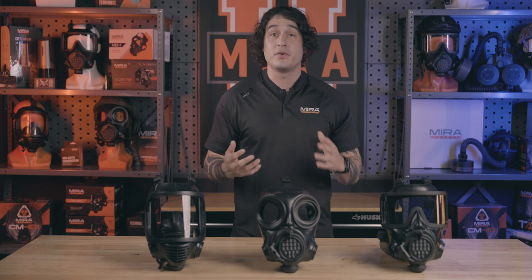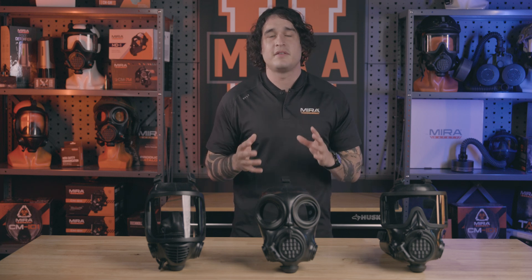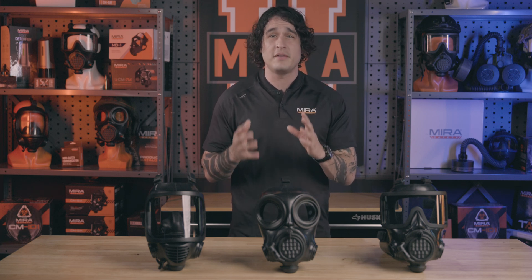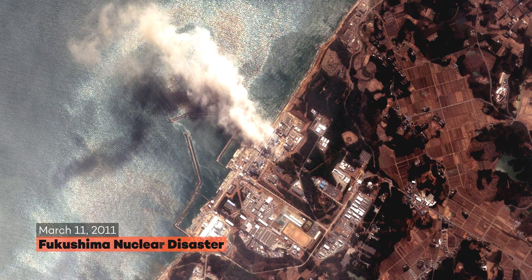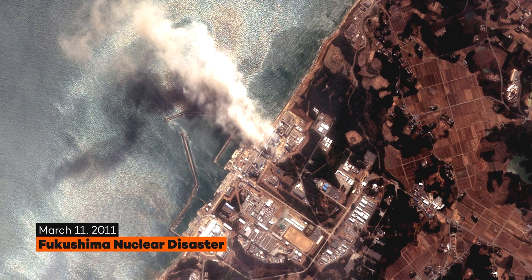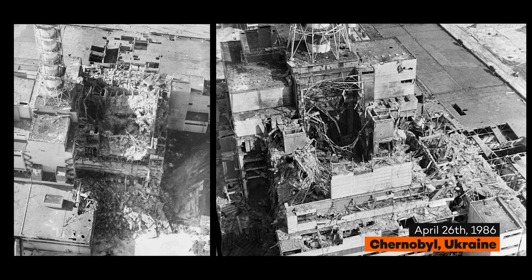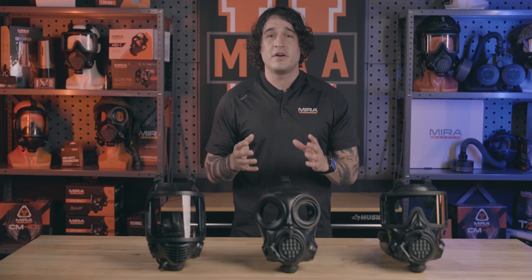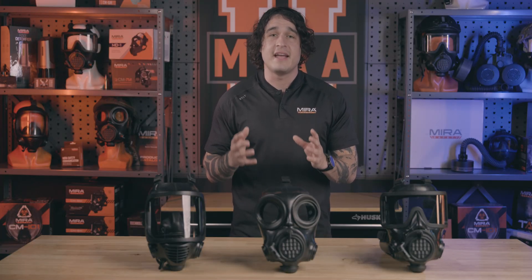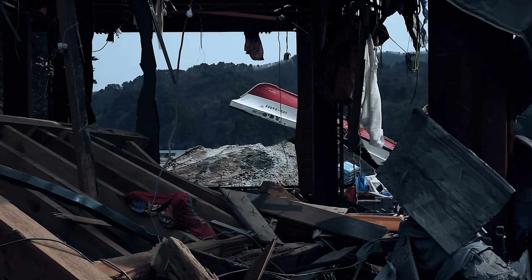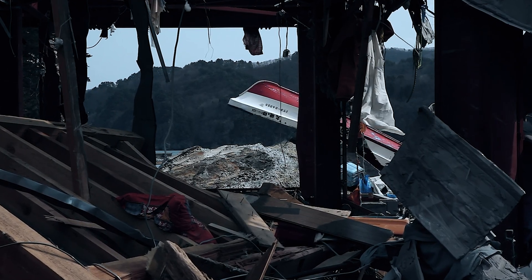Moving on to radiological threats, the two biggest ones we have to talk about are nuclear reactor meltdowns and dirty bombs. The two most prominent nuclear reactor meltdowns are the Fukushima reactor meltdown in Japan and the Chernobyl nuclear meltdown in Ukraine. Both of these spread radioactive material out into the local populace, which will take decades to clean up and cause untold injury and illness amongst the population.